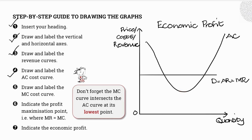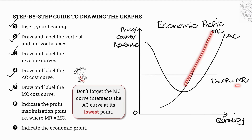Let me draw in my marginal cost curve and label it, making sure it intersects the average cost curve at approximately the lowest point — that looks more or less dead center. The next thing I'm going to do is indicate the profit maximization point, which is of course where marginal revenue equals marginal cost. So I indicate where my marginal cost curve and marginal revenue curve intersect, and I label that as the equilibrium point E.